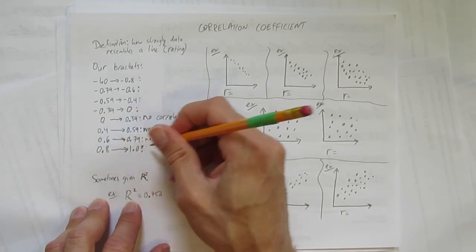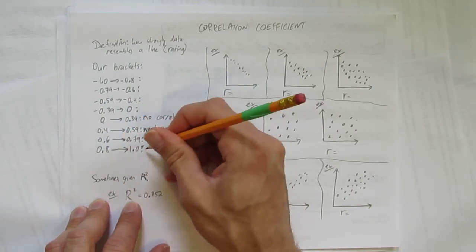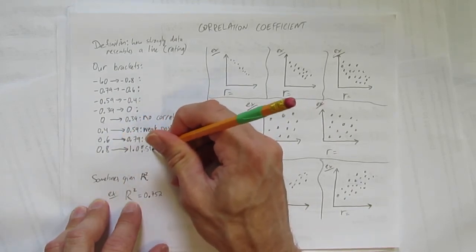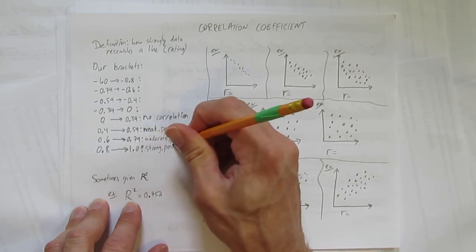And finally if you're 80% to 100% or 0.8 to 1.0, that's a strong positive correlation coefficient.